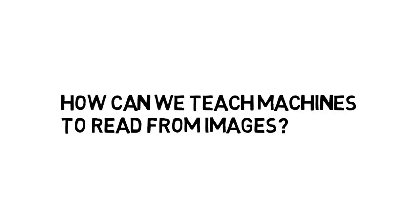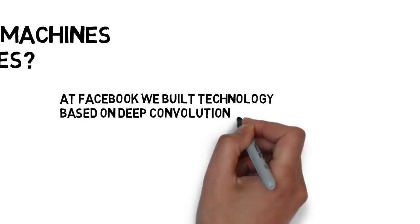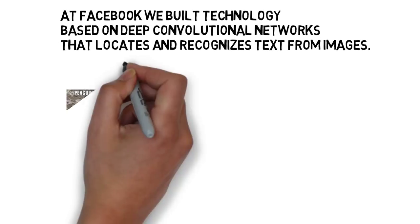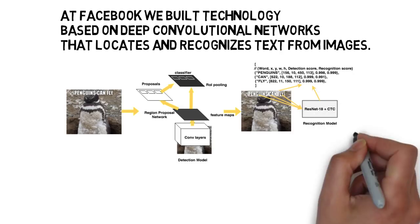How can we teach machines to read from images? At Facebook, we built technology based on deep convolutional neural networks that locate and recognize text from images.